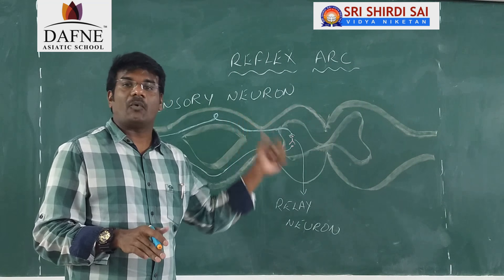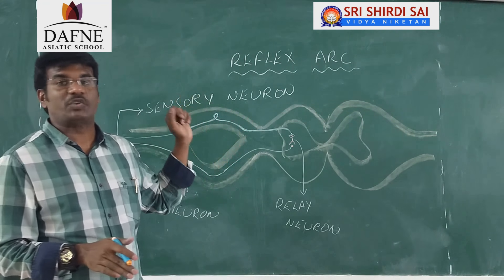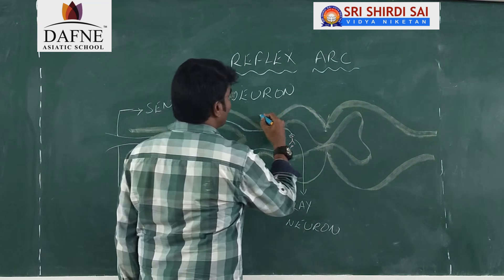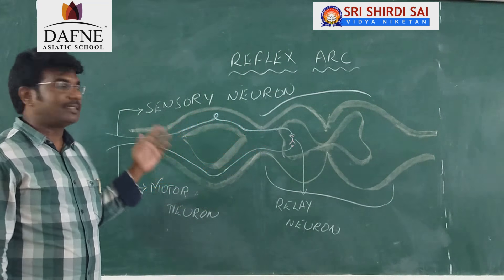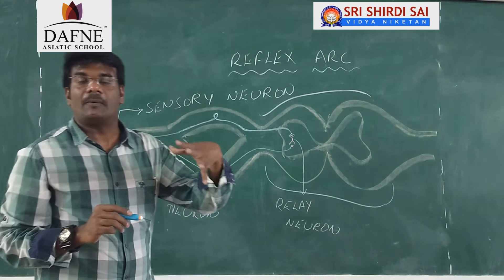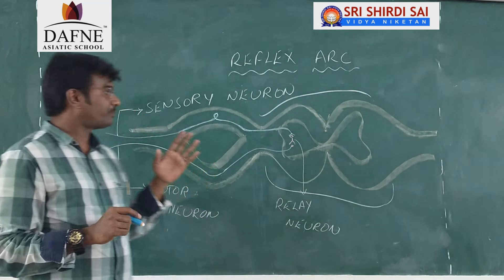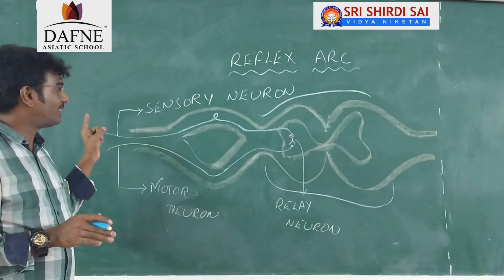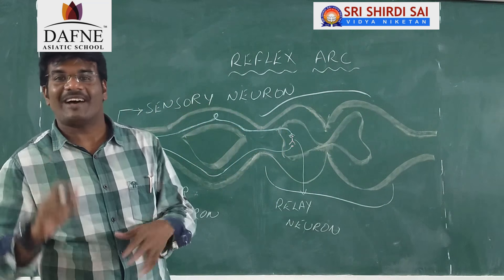Let us see in detail what we mean by the reflex arc. Please note down the figure being drawn on the board sheet after I go through the explanation. This is the spinal cord. The spinal cord has two particular terminals. From one terminal there is a neuron which tries to sense the stimulus — the nerve cells that detect the stimulus are termed afferent nerves or sensory nerves, as discussed in the previous session. The sensory nerve carries the stimulus information to the spinal cord.